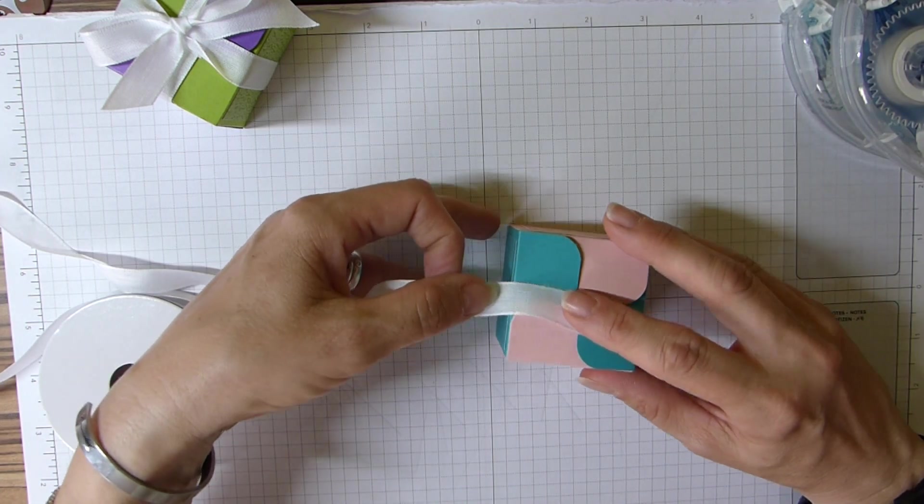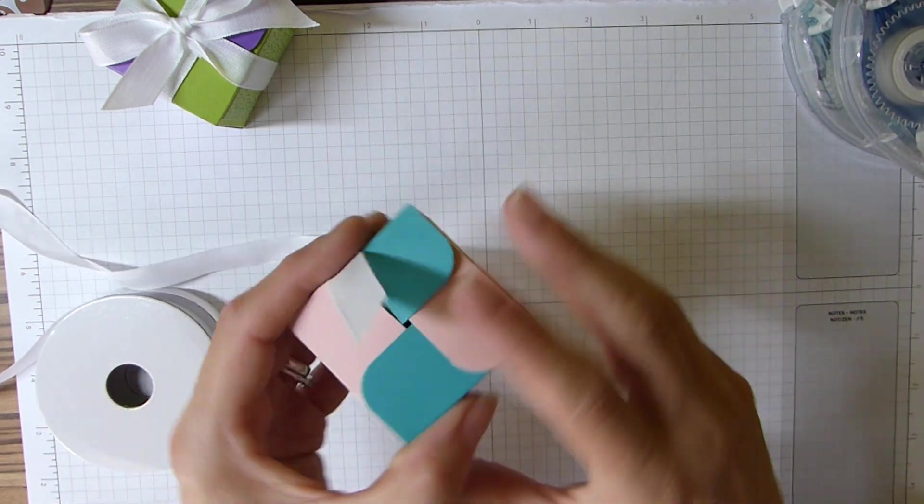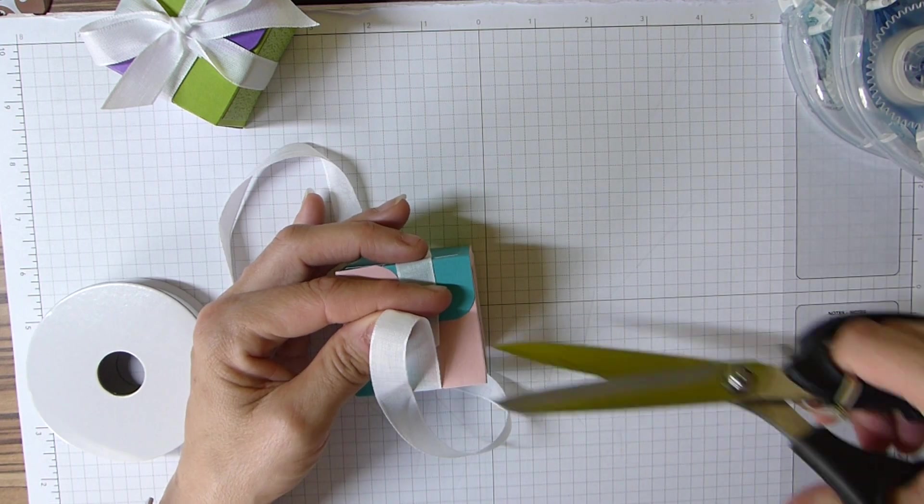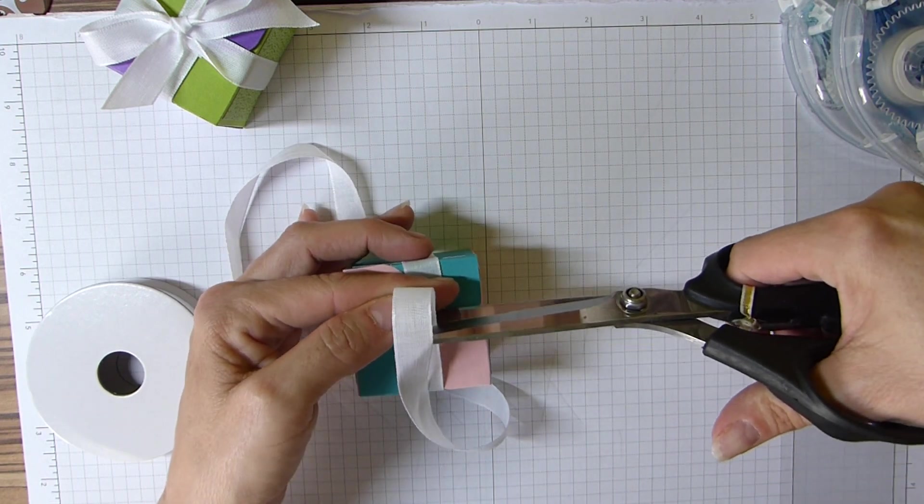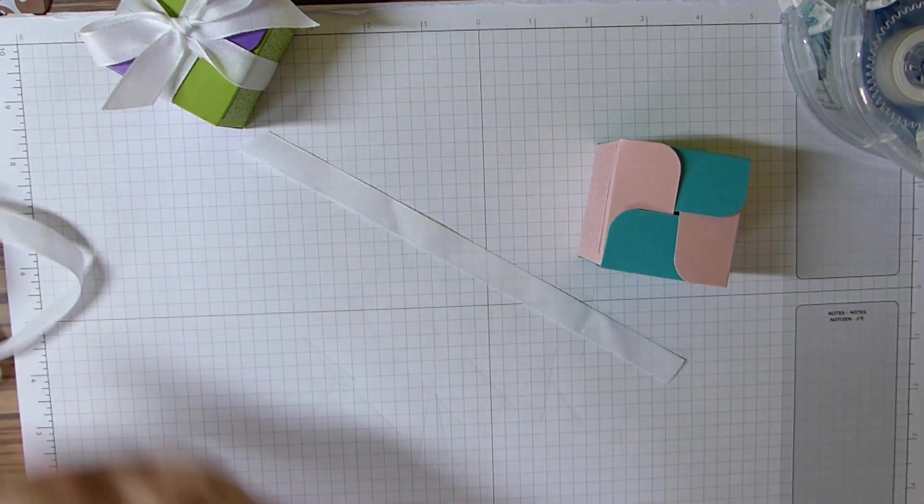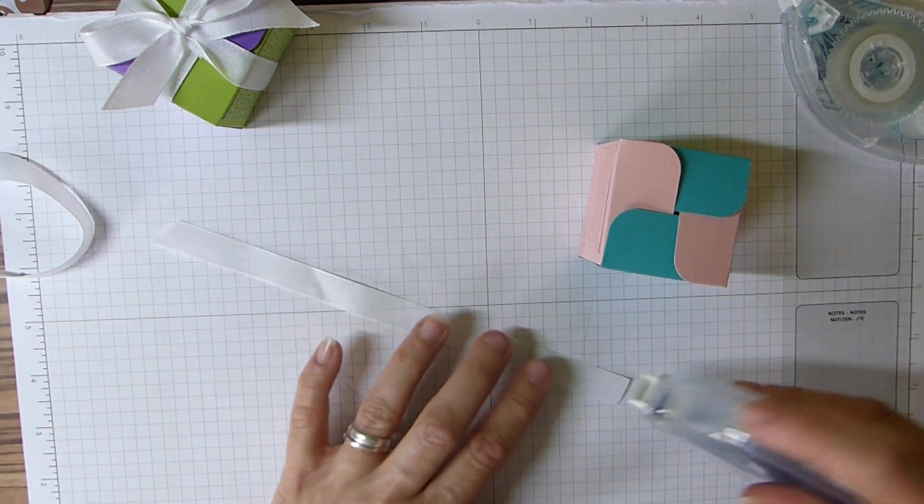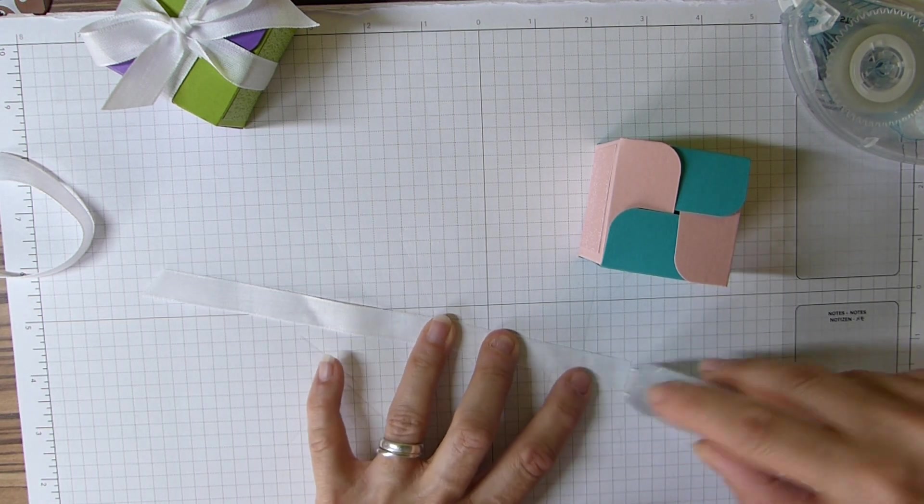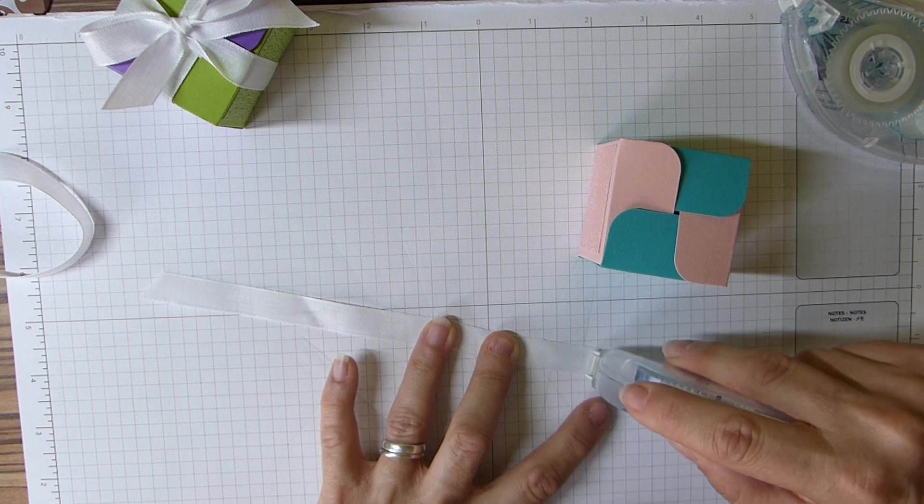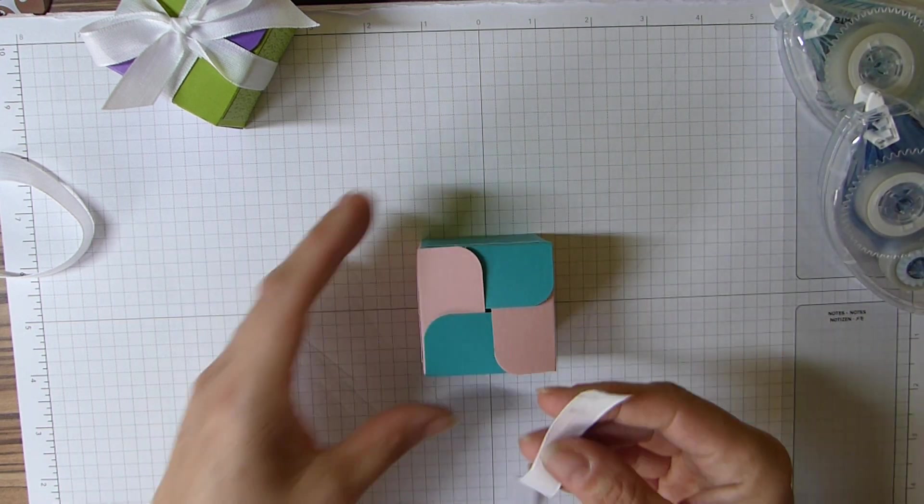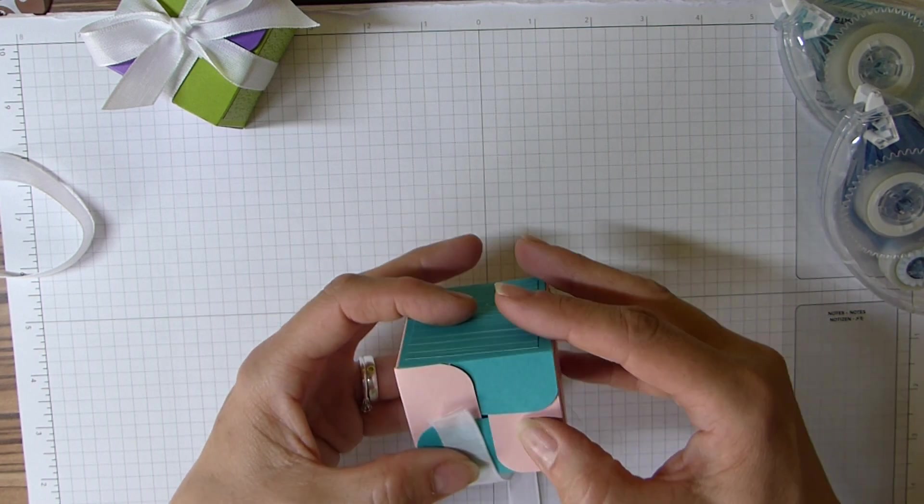So what I did was I made a belly band initially. So I just simply made a belly band and I'm just going to put some of my Seal Plus on my ribbon, and then I'm just going to put it on the top.